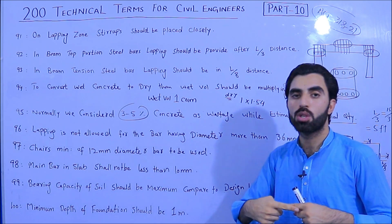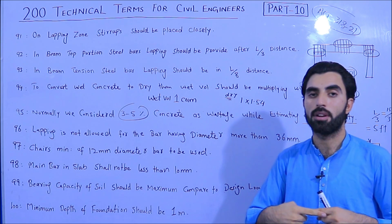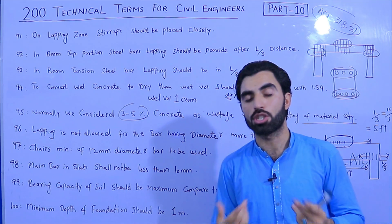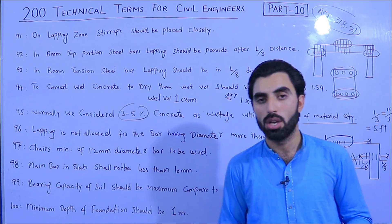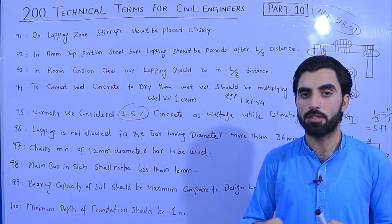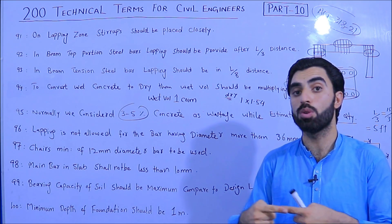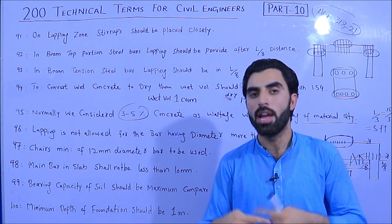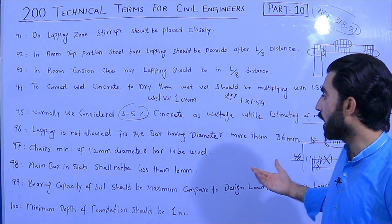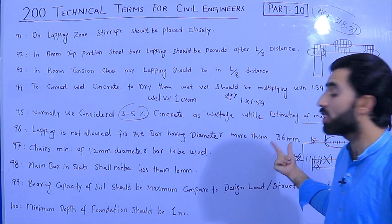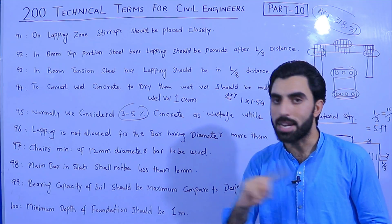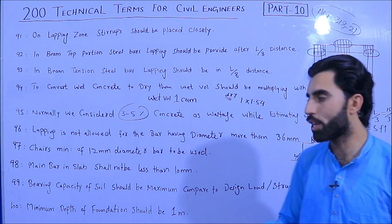Term 96: Lapping is not allowed for bars having a diameter more than 36 mm. Steel bars come in a standard factory length of 12 meters. If you need to extend the length, you overlap one bar with another — but this is not allowed when the bar diameter exceeds 36 mm.